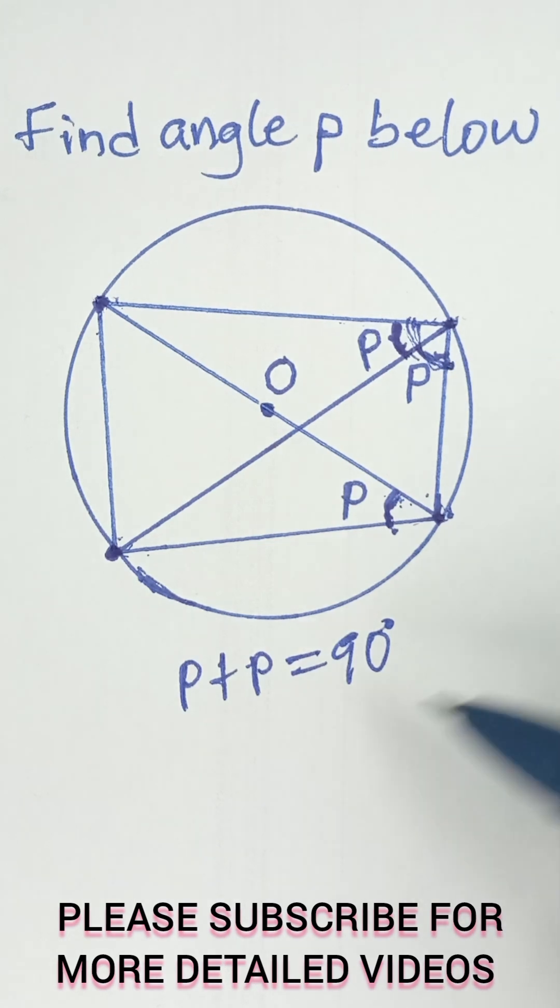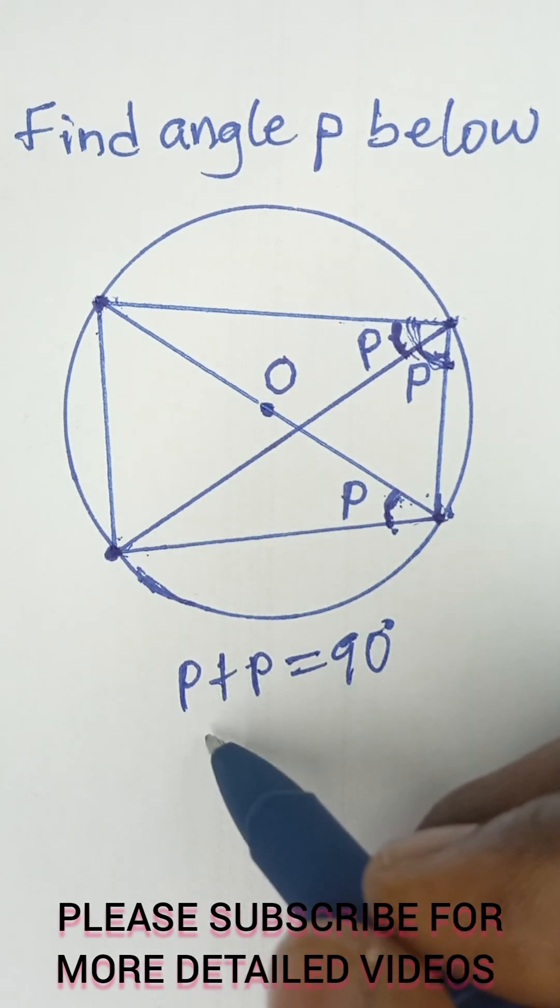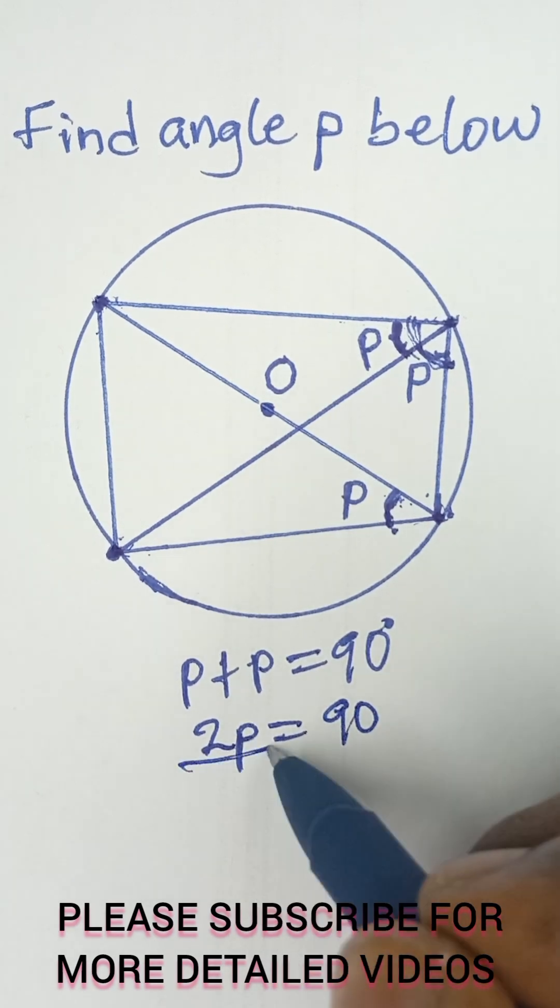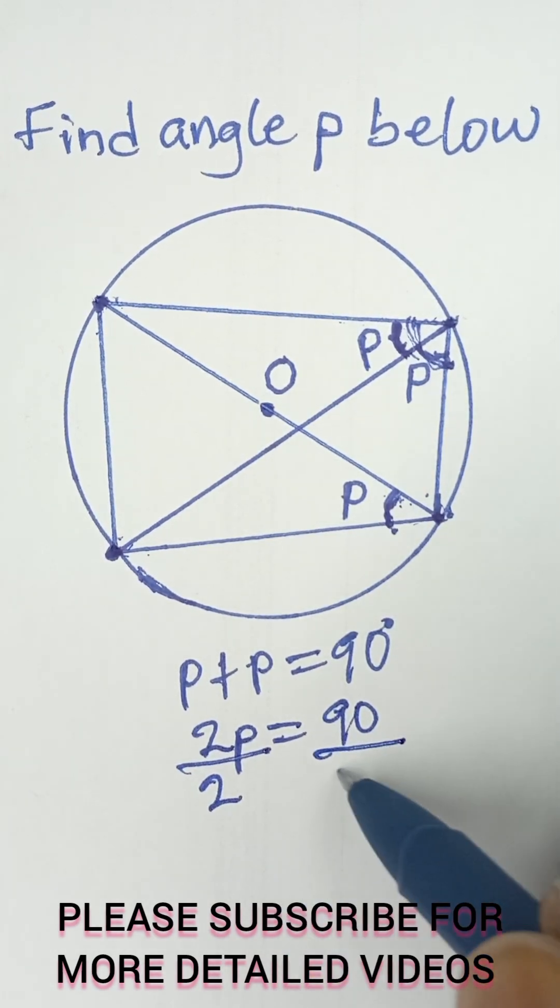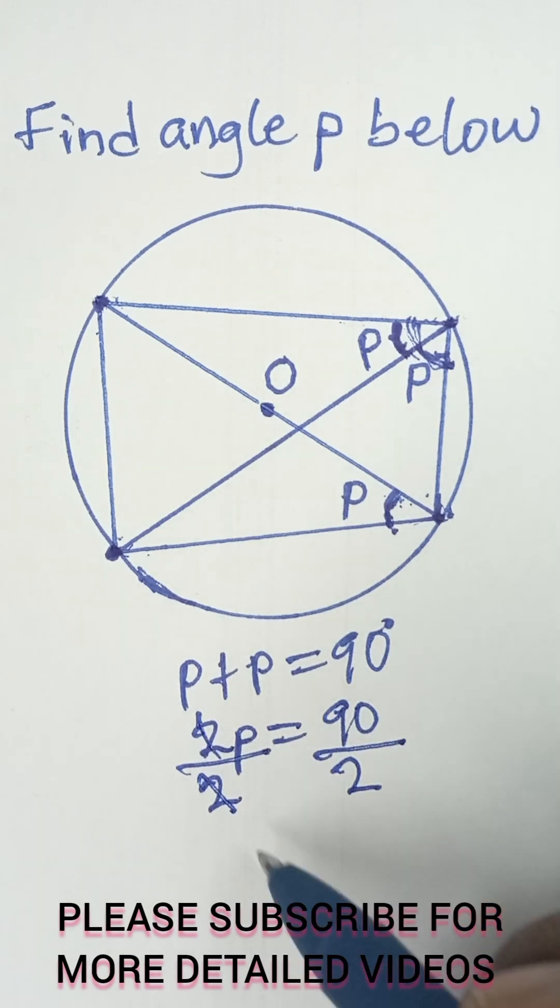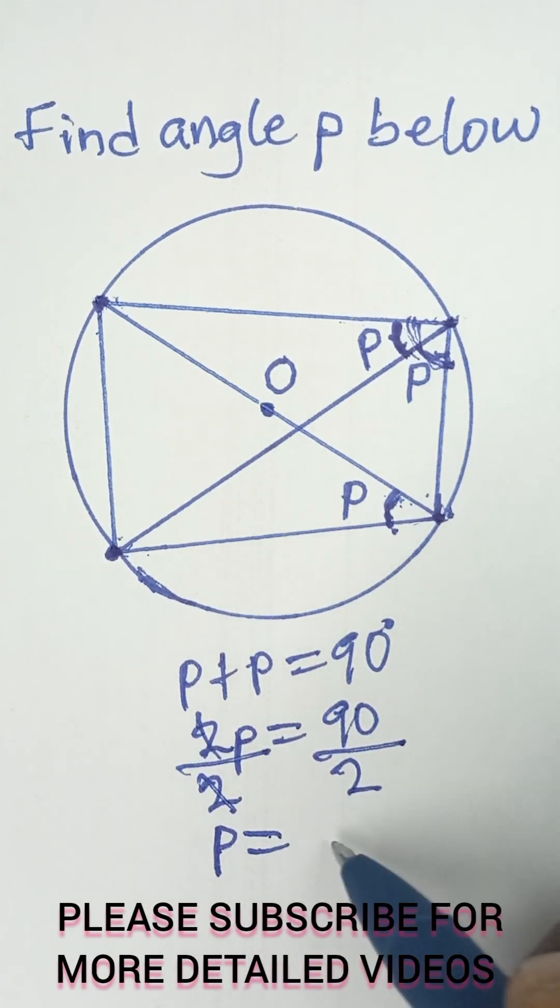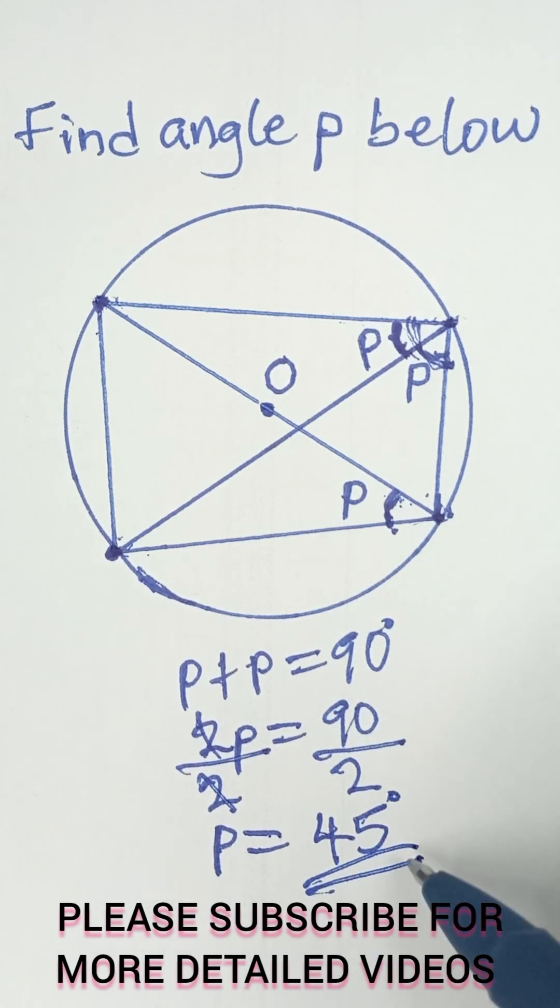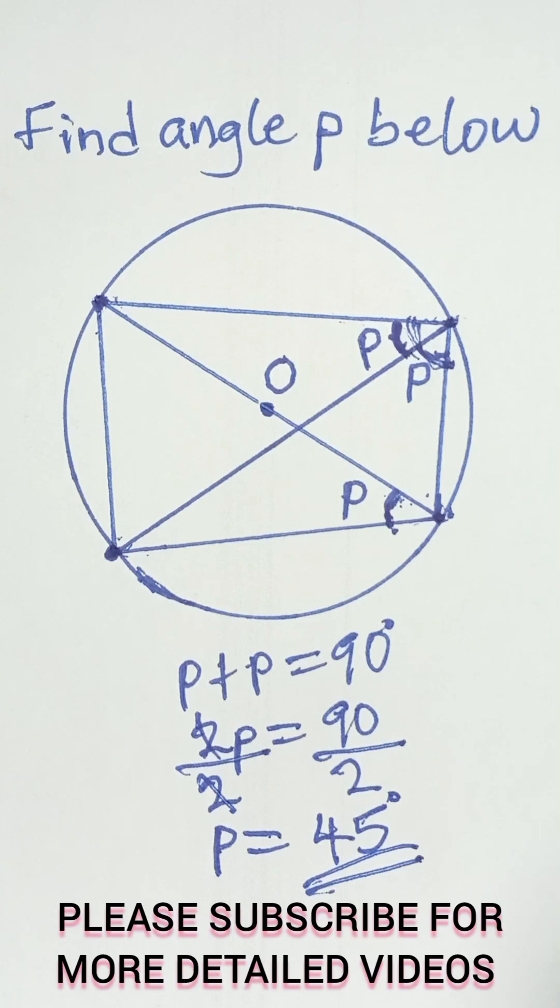So now I can simply say 2P is equal to 90 degrees. And then I divide both sides by 2. This cancels this, and finally I have P is equal to 90 divided by 2, which is 45. So angle P is 45 degrees, and that's the final answer.